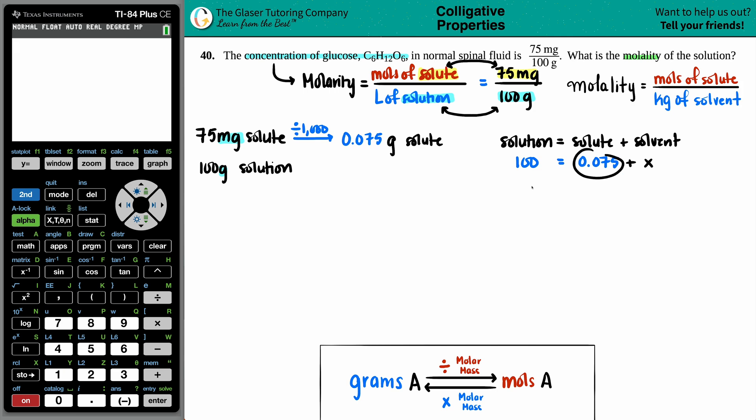You would minus this number on both sides. And the amount of solvent that we have is 100, what was that? I have no idea. Minus 0.075.